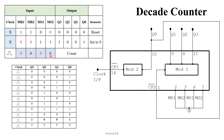The clock input is given to CP1 with MR1, MR2, MS1, MS2 all set to 0, giving us the regular counting operation. The truth table starts from 0000 and counts up to 1001 — that is, 0 to 9 — after which it comes back to 0.